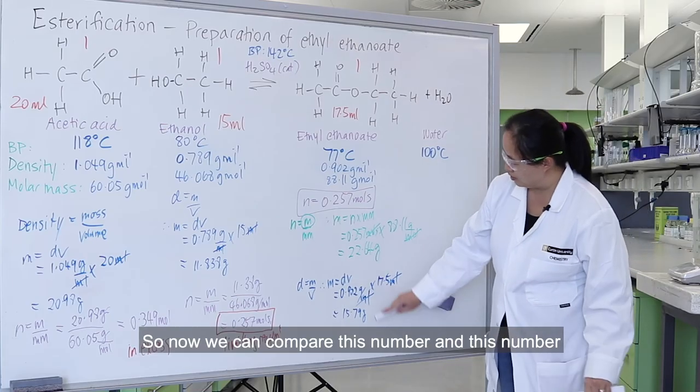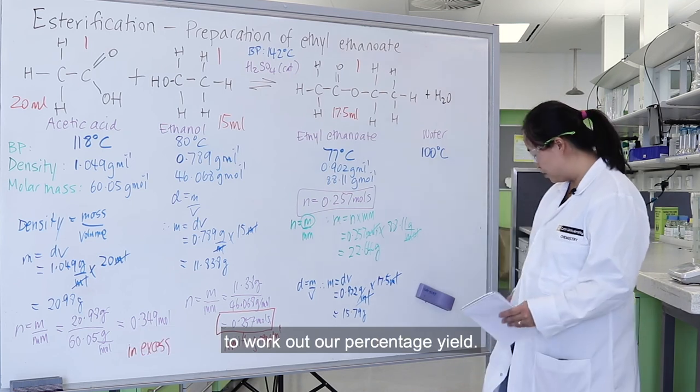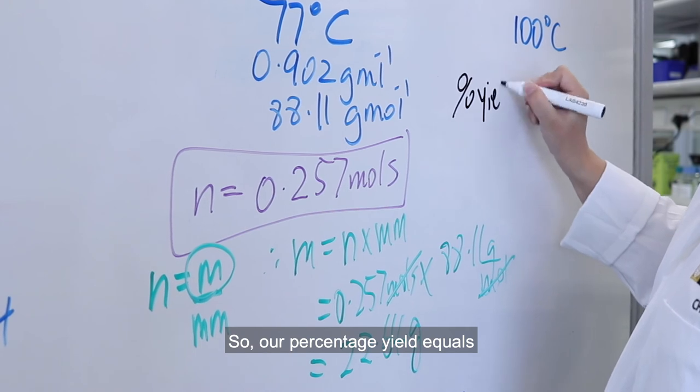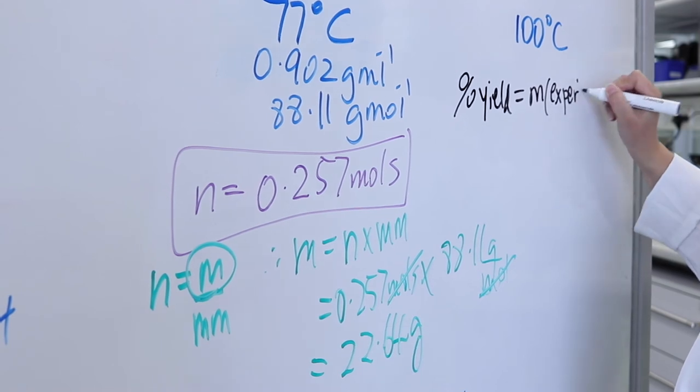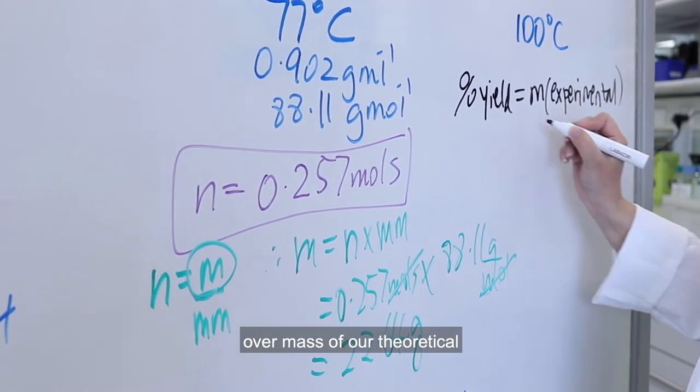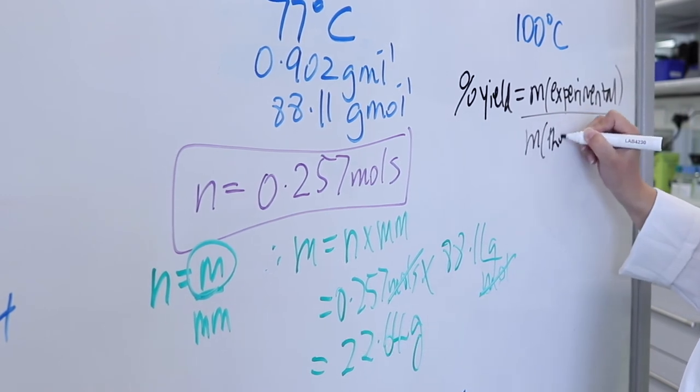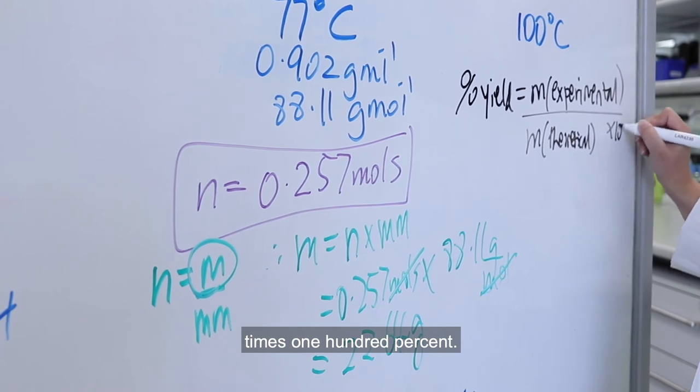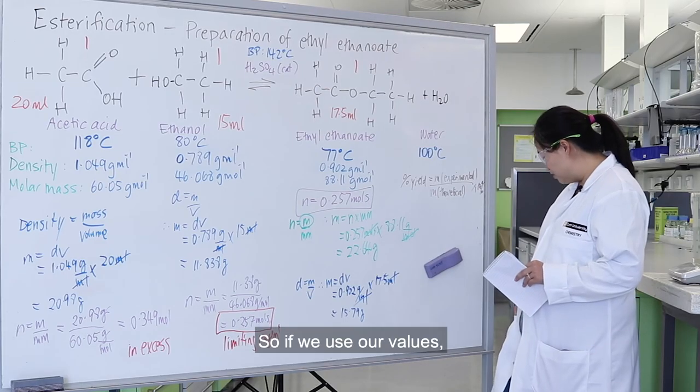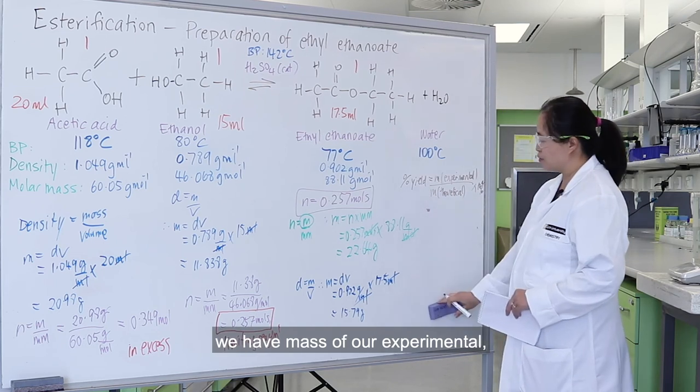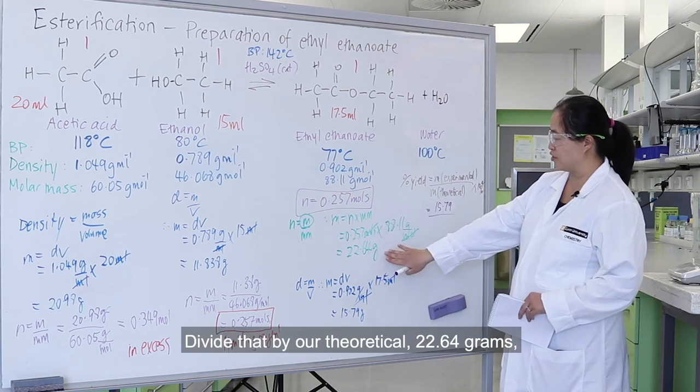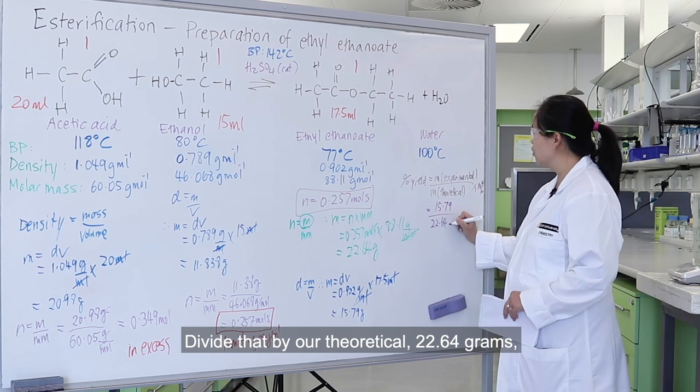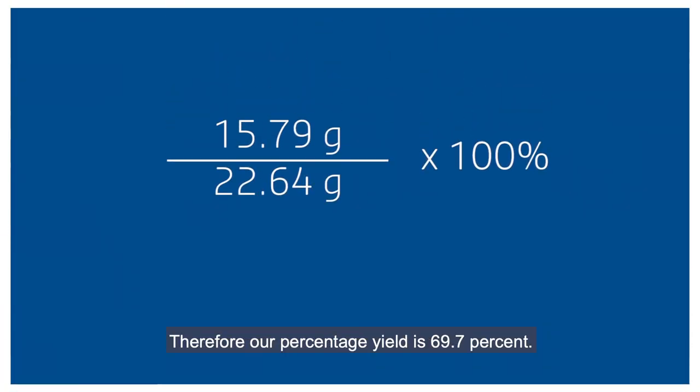Now we can compare this number and this number to work out our percentage yield. Percentage yield equals mass of our experimental over mass of our theoretical times 100 percent. Using our values, we have 15.79 grams divided by 22.64 grams times 100 percent. Therefore, our percentage yield is 69.7 percent.